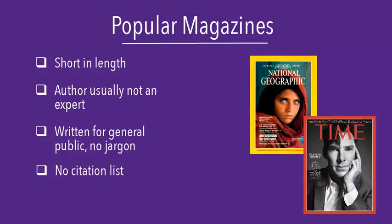Examples of popular magazines are Time and National Geographic. These sources can have good information, but they usually aren't appropriate for research papers.